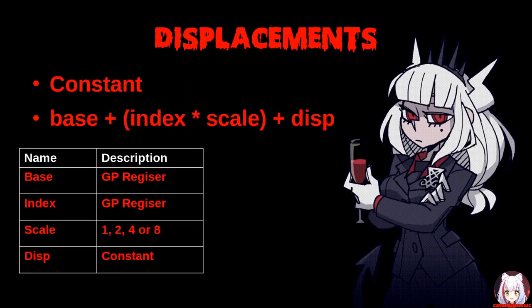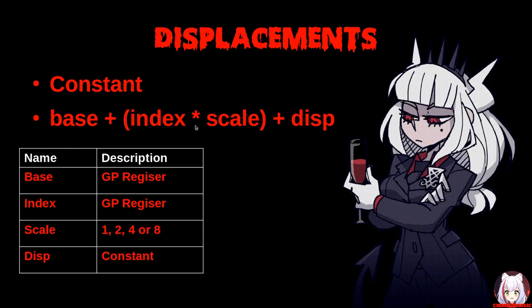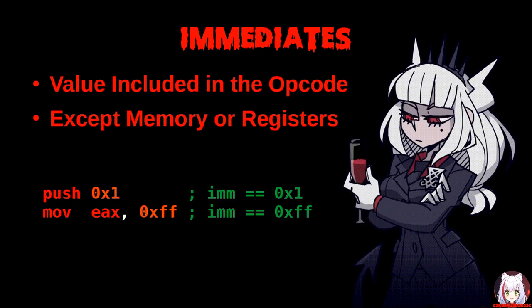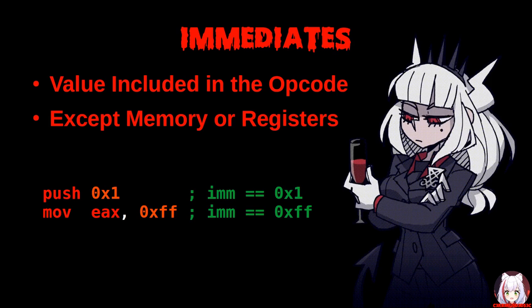A displacement value is a 1, 2, 4, or 8-byte offset added to the calculated address, computed as: base plus the index times the scale plus the displacement value. The base and index can each be a general purpose register, the scale can be 1, 2, 4, or 8, and the displacement is a constant. An immediate value is a constant number embedded into the instruction itself, as opposed to one loaded from another place. For example, pushing the value 1 to the stack means the immediate value is 1 byte; likewise, MOV EAX, 0xFF is also 1 byte.